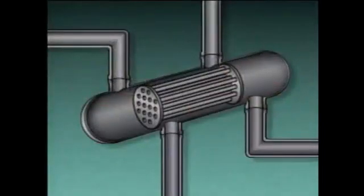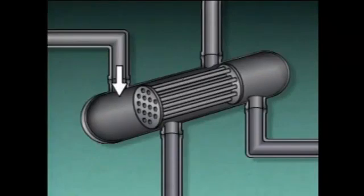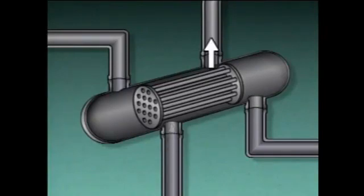A shell and tube heat exchanger known as a thermosiphon reboiler is used to heat process liquid from a distillation column to produce a vapor; the vapor and process liquid then flow back to the column. The major components of this reboiler include a shell, a tube bundle, a tube-side inlet, a tube-side outlet, a shell-side inlet, and a shell-side outlet.